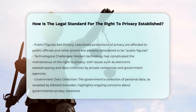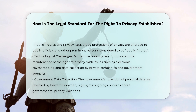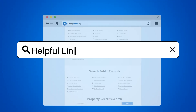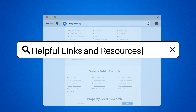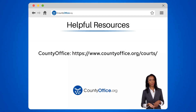Helpful resources: County Office at countyoffice.org, Wikipedia's right to privacy page, FindLaw's coverage on whether there is a right to privacy amendment, and SafeComputing at UMich's history of privacy timeline. To learn more, check out these links, which you can click in the description below.